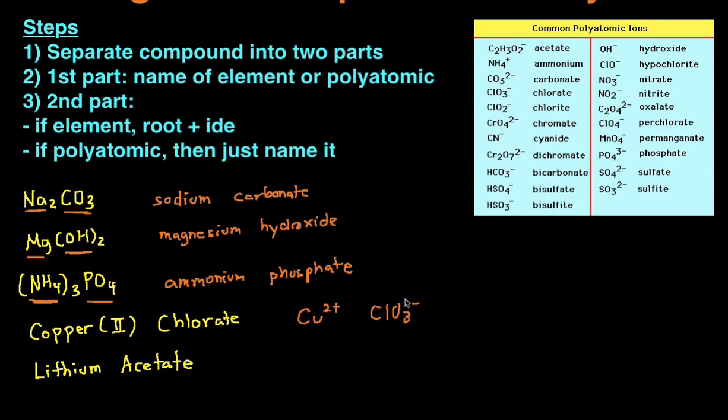Then we double check if these charges are going to cancel each other out, and they don't because positive two does not cancel out with negative one. And then if they don't cancel out, then we crisscross, giving us copper one, or just copper, and then chlorate two. And then when you have multiple polyatomic ions, you're going to have to put a parentheses around it, just to indicate that there's two chlorates.